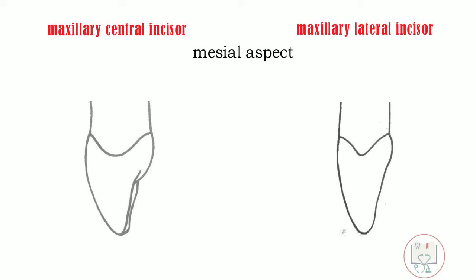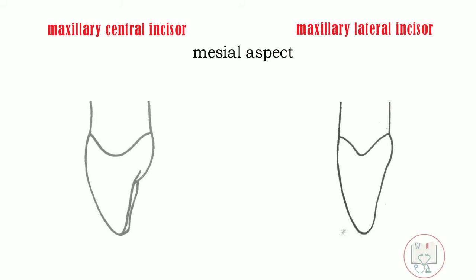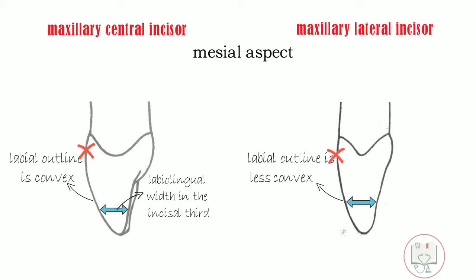From the mesial aspect, both teeth are similar in having a triangular shape with the incisal ridge on the midline axis. The labial outline of the crown in both incisors is convex, but is less convex in the lateral incisor, though the crest of contour is at the same level. The labiolingual width of the crown at the incisal third appears greater in the lateral incisor, because of the more prominent incisal and marginal ridges.